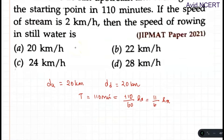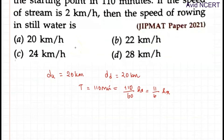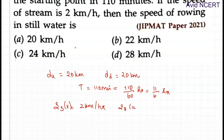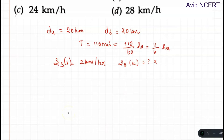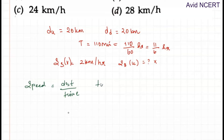The speed of the stream is 2 kilometers per hour, so we denote the speed of the stream as v = 2 km/h. The speed of the rowing in still water — that is, the speed of the boat — is u, which we'll call x, and that is what we need to find. The formula we know is: speed equals distance divided by time.